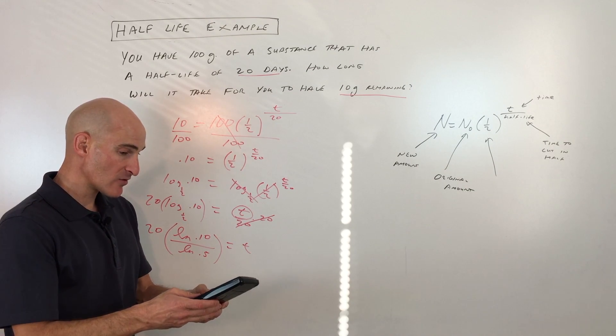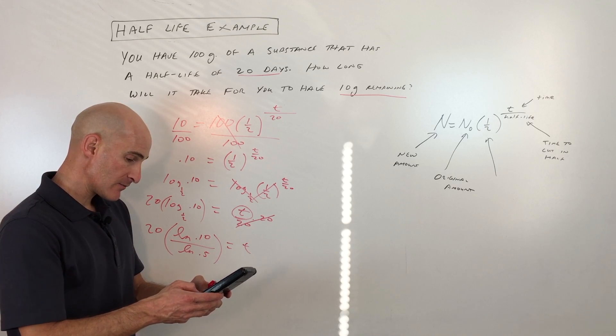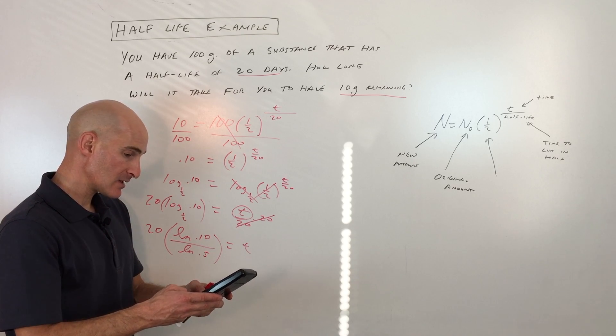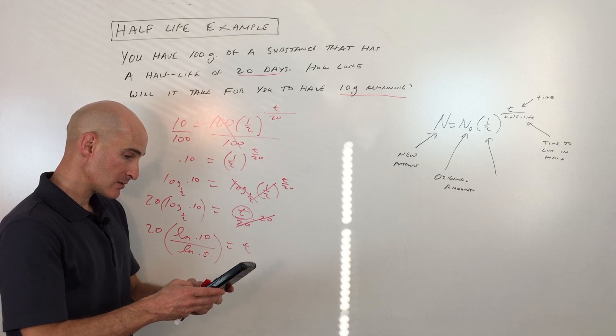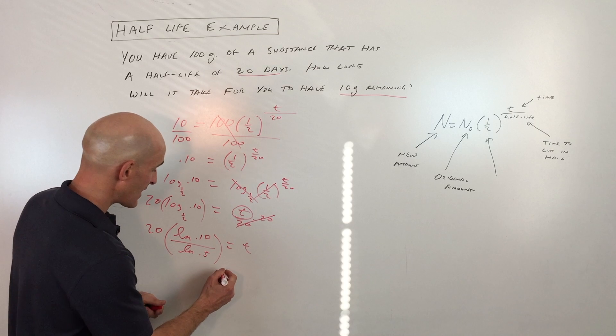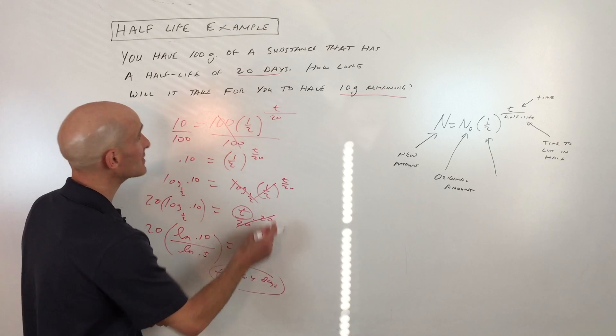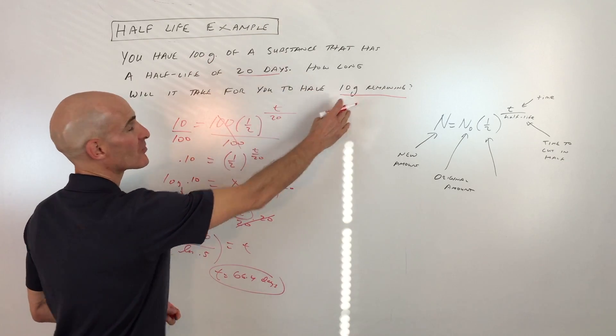You can double-check me here. We've got natural log 0.10 divided by natural log 0.5 times 20, 66.4 days. So that's the time. t equals 66.4 days. And that's how long it'll take to go from 100 grams initially to 10 grams remaining.